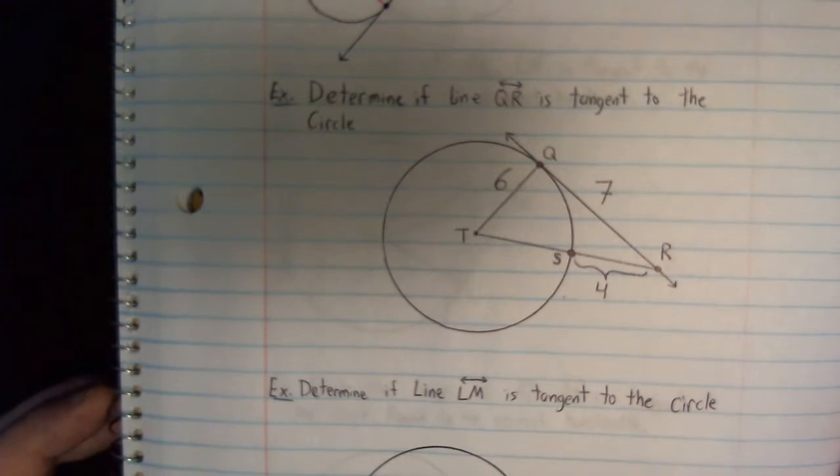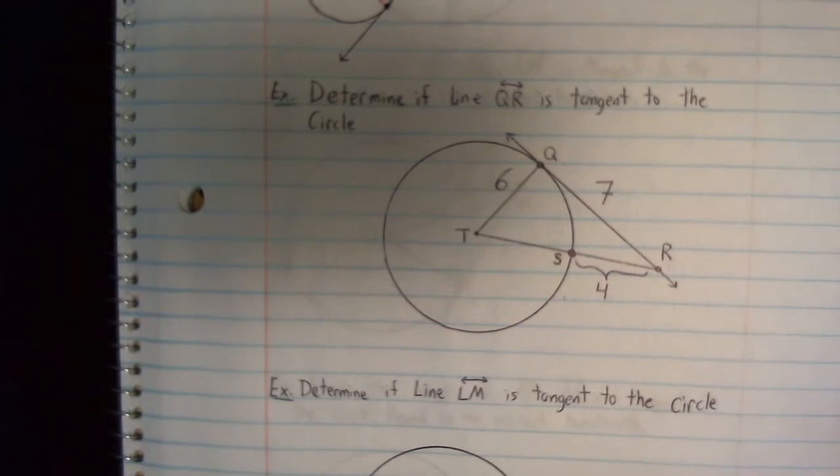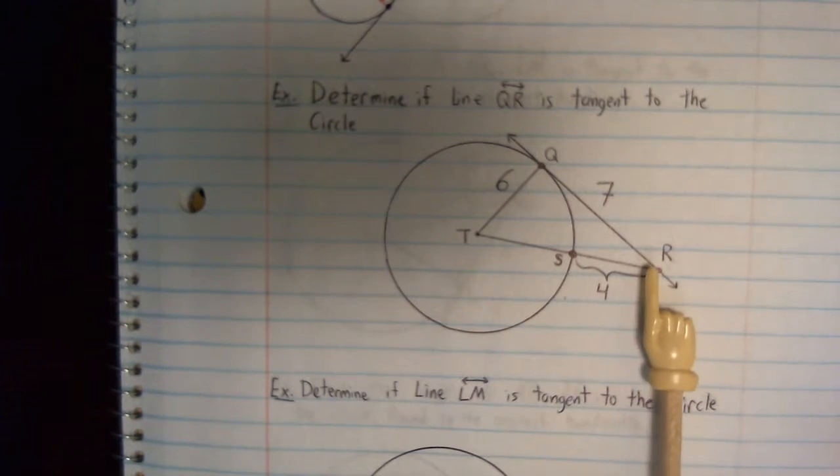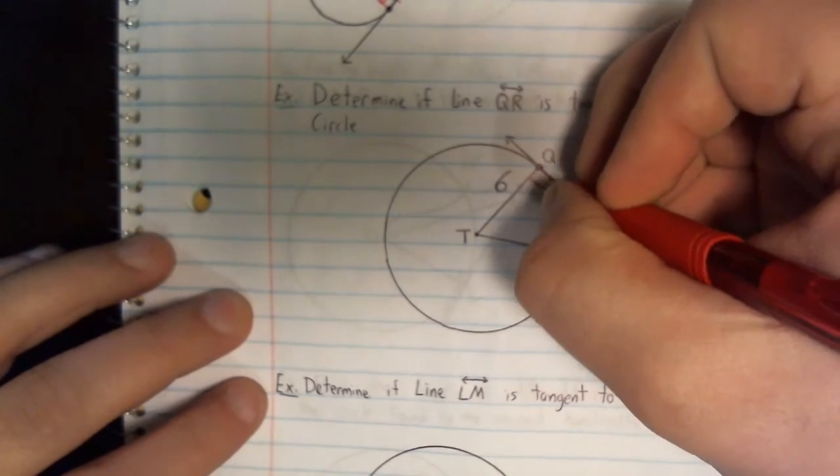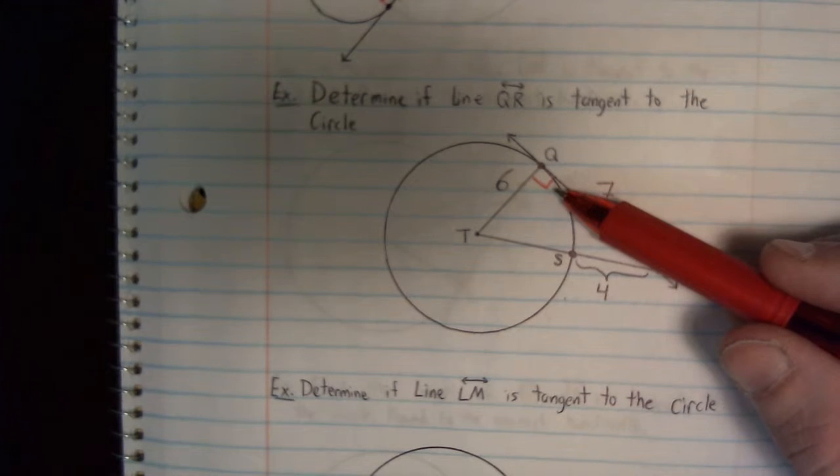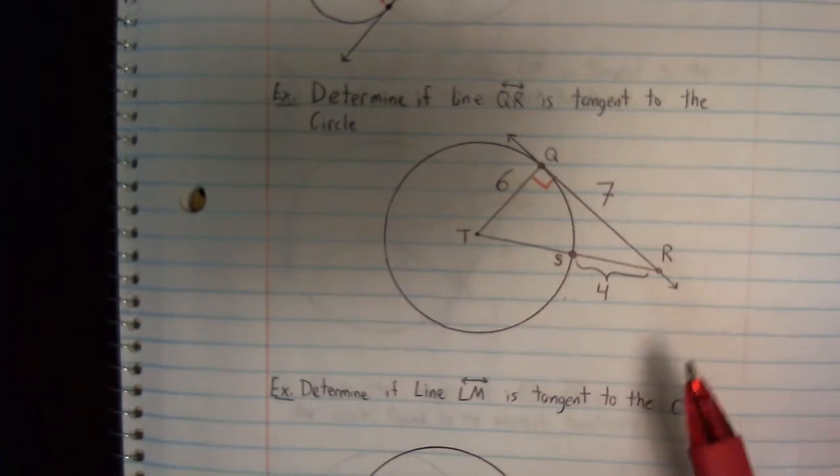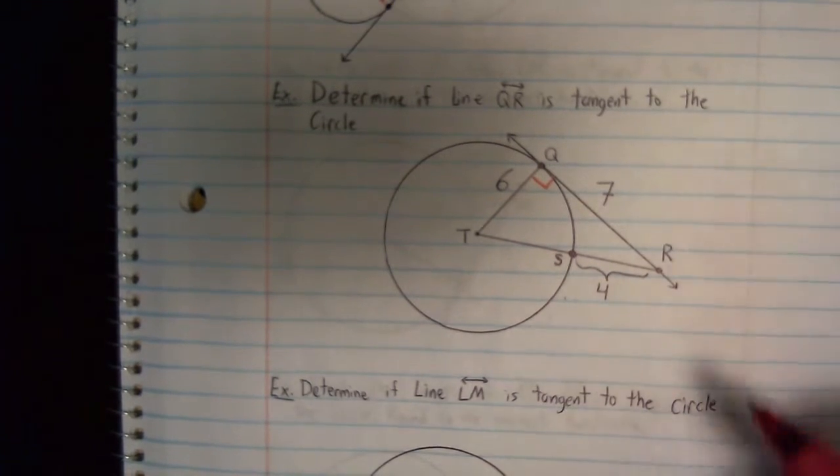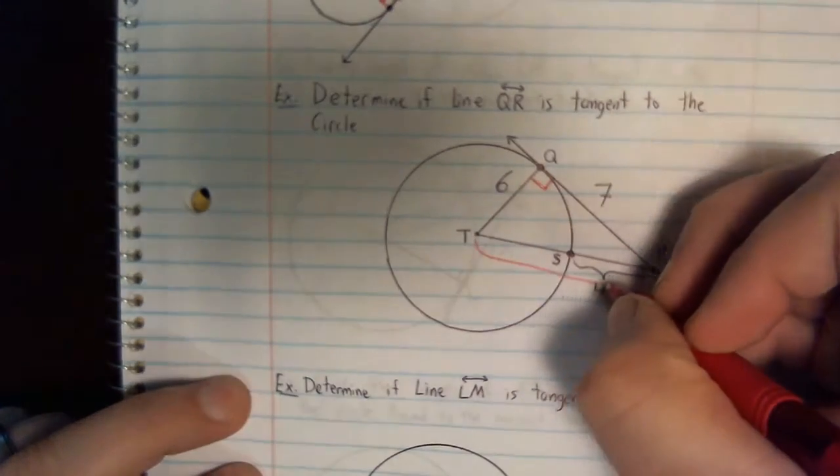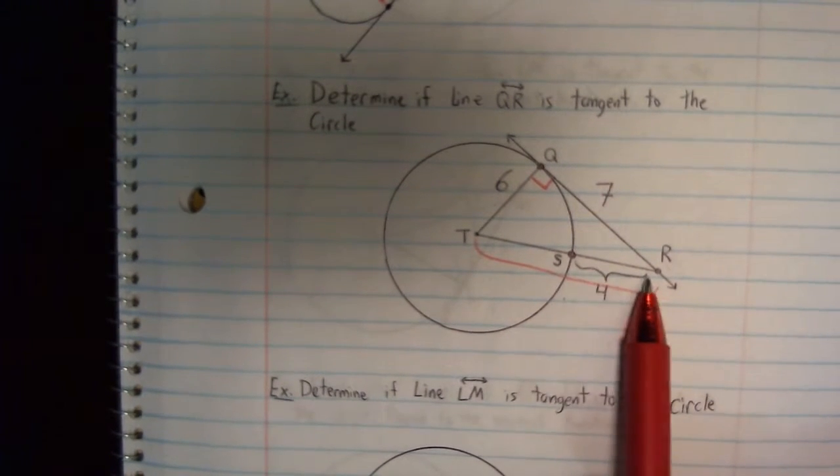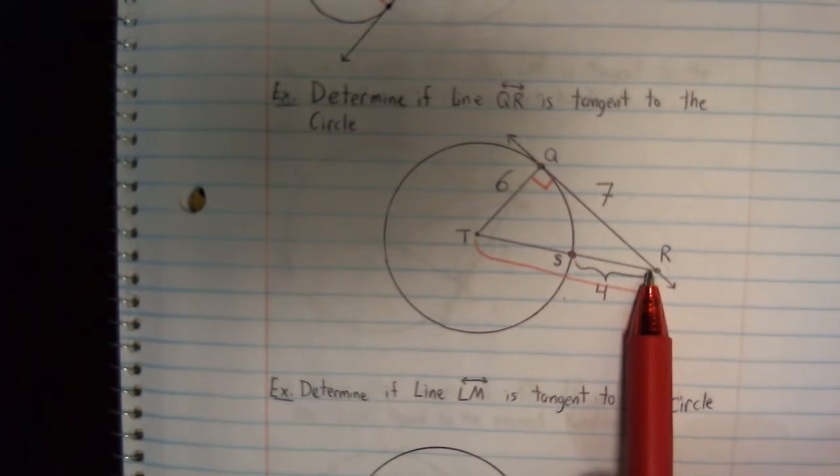The first problem asks us to determine if line QR is tangent to the circle. So here's QR. They give us some lengths. And we're trying to figure out if it's tangent or not. So here's what we're going to do. We're going to assume right now that it is, and we're going to make that perpendicular. So we've got a 90 degree angle. Then what we're going to do is from that 90, we're going to decide which one of the sides is the hypotenuse or the C value for our Pythagorean theorem. Well, this entire length right here would be the C value. That's the hypotenuse. They only tell me about this piece right here, which is worth four.